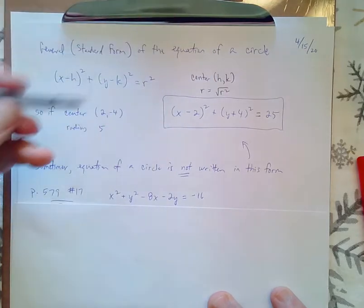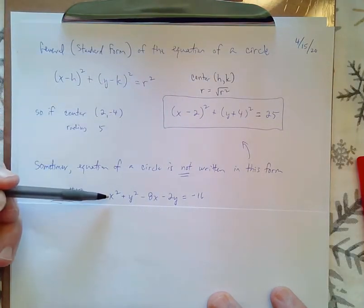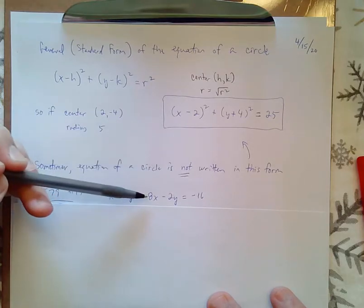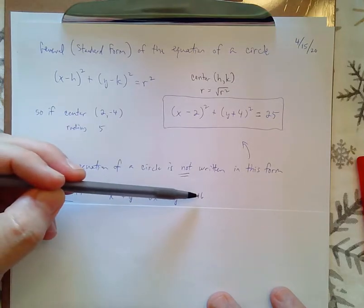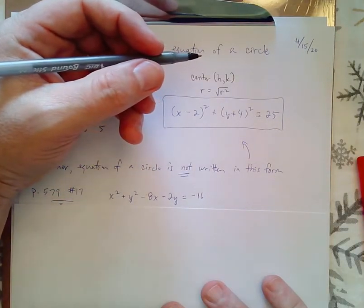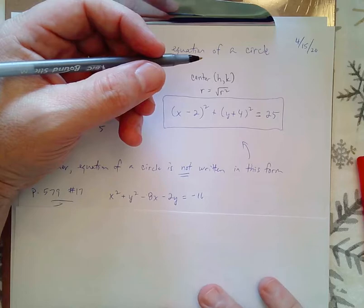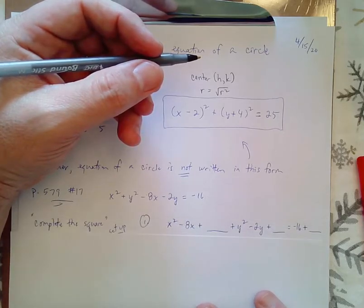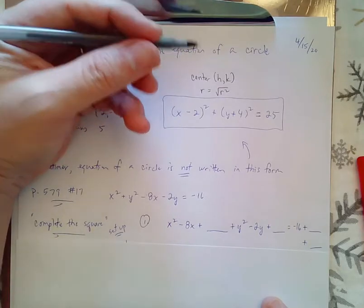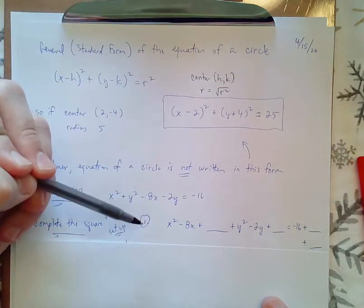I believe it's number 17 on page 579. It's one of your homework problems. You see how the equation is written with x squared plus y squared, and then you have the x and the y separate and a number outside. So, what we're going to do is we're going to use a process that you'll learn now, but it's also very important in algebra, too. It's called completion of the square.